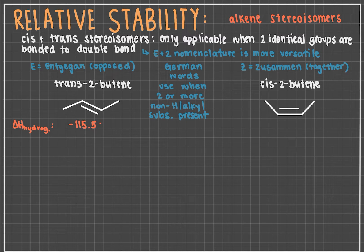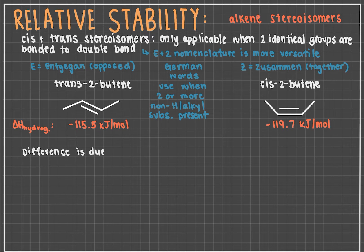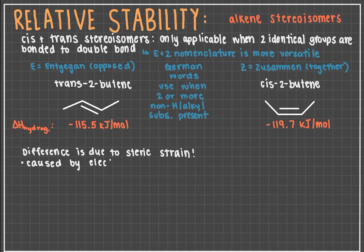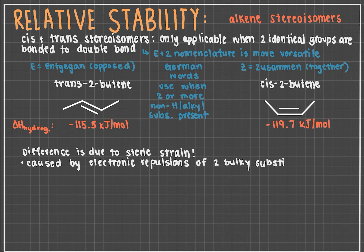Let's look at the enthalpies of hydrogenation of trans- and cis-2-butene. Trans-2-butene has an enthalpy of hydrogenation of around negative 115.5 kilojoules per mole, whereas cis-2-butene has an enthalpy of hydrogenation of roughly negative 119.7 kilojoules per mole. Why exactly is there a 4.2 kilojoule per mole difference between the two stereoisomers when the location of the double bond is identical? It can't be due to the bond strength or more alkyl substituents at the double bond, because both molecules are identical in those aspects too.